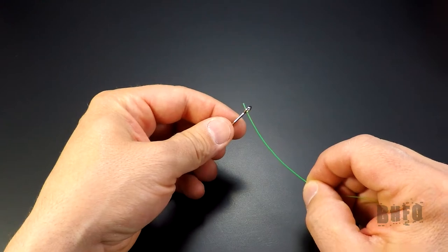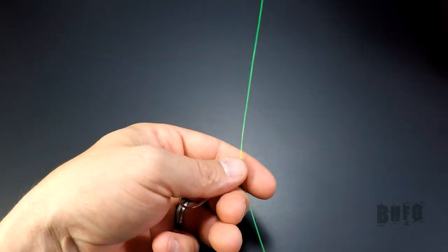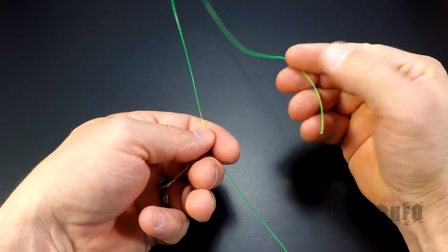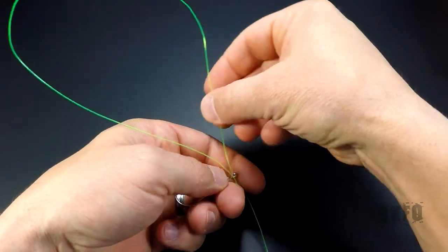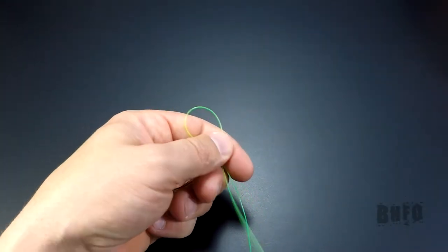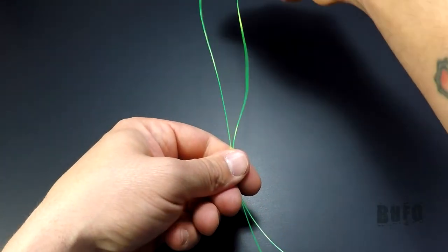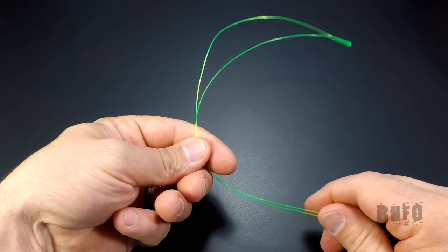Take the line and go through the hook eye pulling out about a 10 to 12 inch tag. Now go back through the way you came out creating about an 8 inch loop with about an 8 inch tag alongside the mainline.